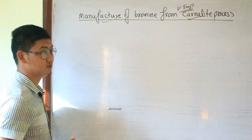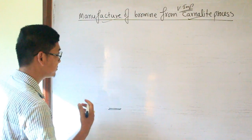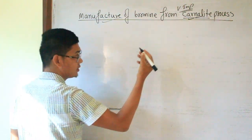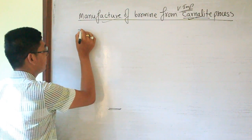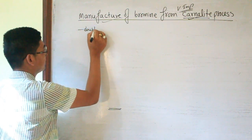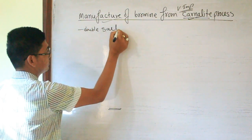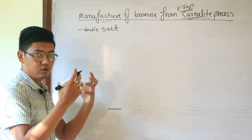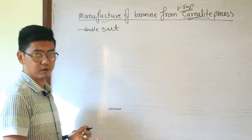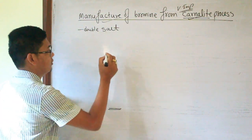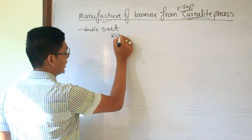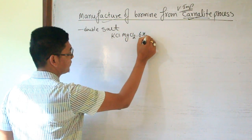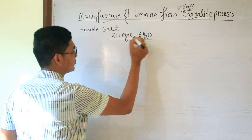We will discuss the catalyte process. What is catalyte? Catalyte is a double salt. The molecular formula is KCl·MgCl₂·6H₂O.